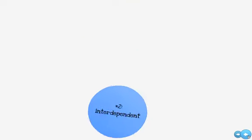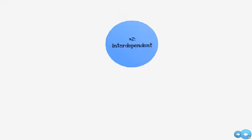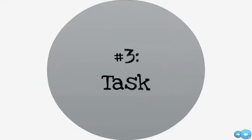The second feature needed for communication to be considered group communication is that the group must be interdependent, meaning that any group member's behavior influences both group members' tasks and relational behaviors. The third and final primary feature is that the group must have a task in which no externally correct decision exists. This means the group's communication is dependent on solving or accomplishing a task or goal that doesn't already have a solution or a correct answer.